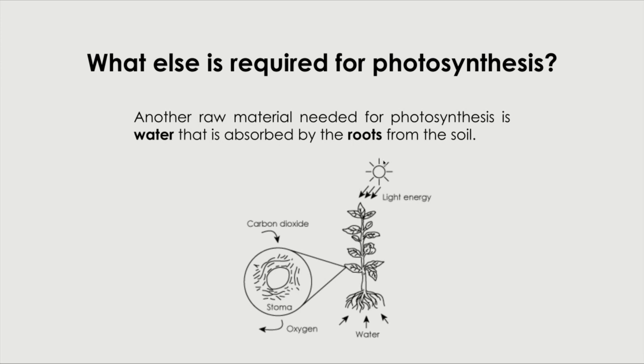You need the light energy and you need water. And then, within the leaves, especially on the underside, we have a lot of these tiny openings called stomata where carbon dioxide enters. And that's how photosynthesis occurs.